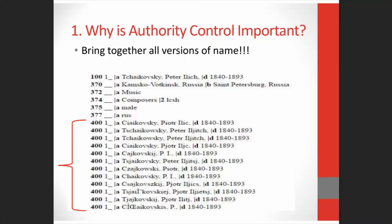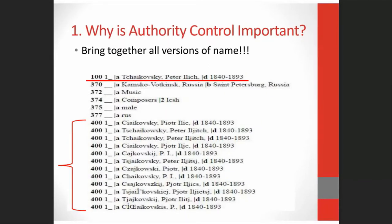The first reason authority control is important is that it gives us a way to bring together all instances of a name or title, no matter how the name or the title is found on the resource. Let's take the composer Peter Tchaikovsky, famous for his ballets The Nutcracker and Swan Lake. This is an excerpt from his Library of Congress authority record, and this long list is the different ways his name has been spelled on publications — and that's only a fraction of the ways his name has been spelled. The only way to bring together all the resources with all those different spellings is through the use of an authorized access point in a catalog record.